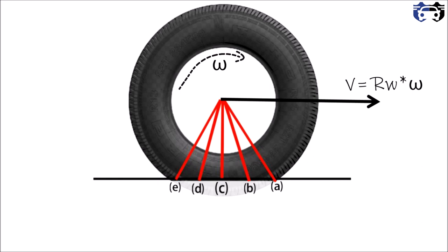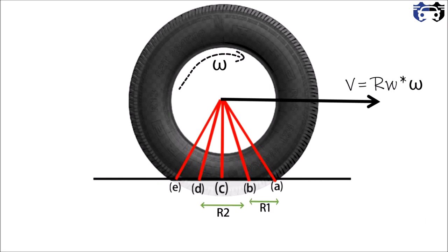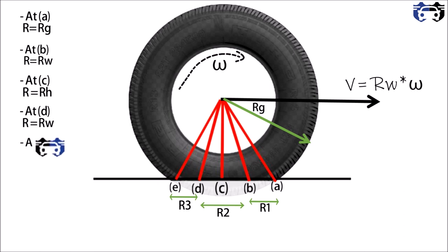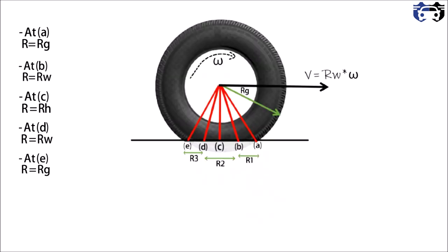As the tire is loaded, it will have different radii at the ground. The radius from a to b is r1, from b to d is r2, and from d to e is r3. The geometric radius is rg. At point a the radius is rg, at point b the radius equals rw (the rolling radius), at point c the radius is rh (the loaded height), at point d it is rw again, and at point e it is rg.